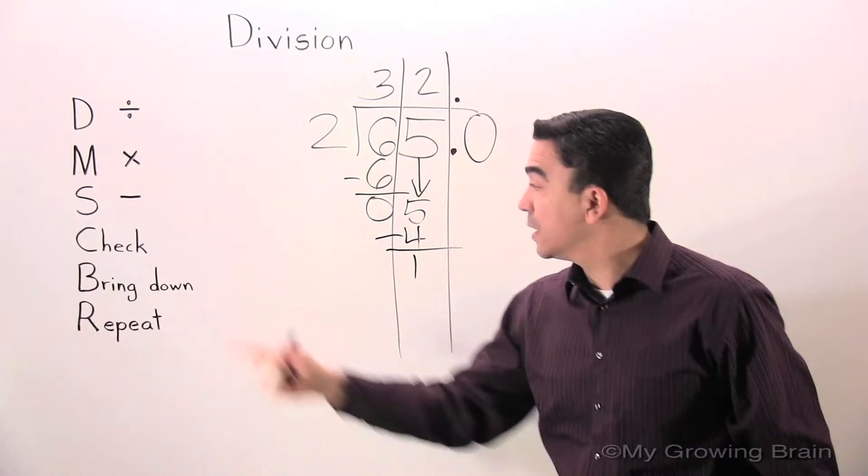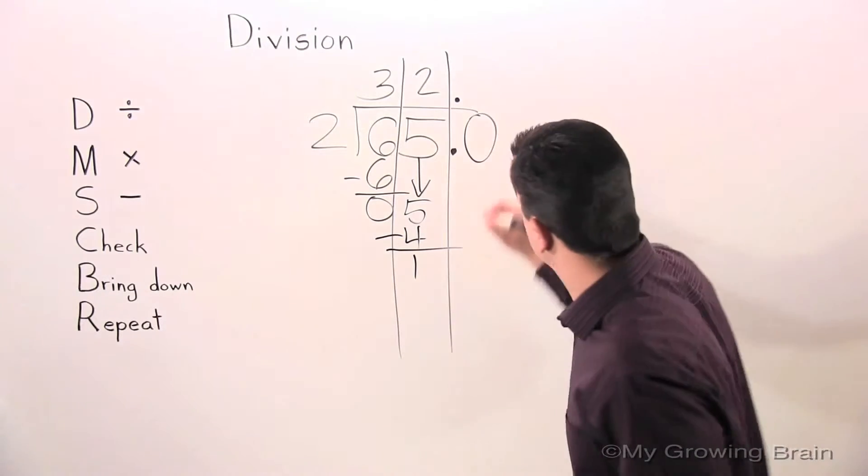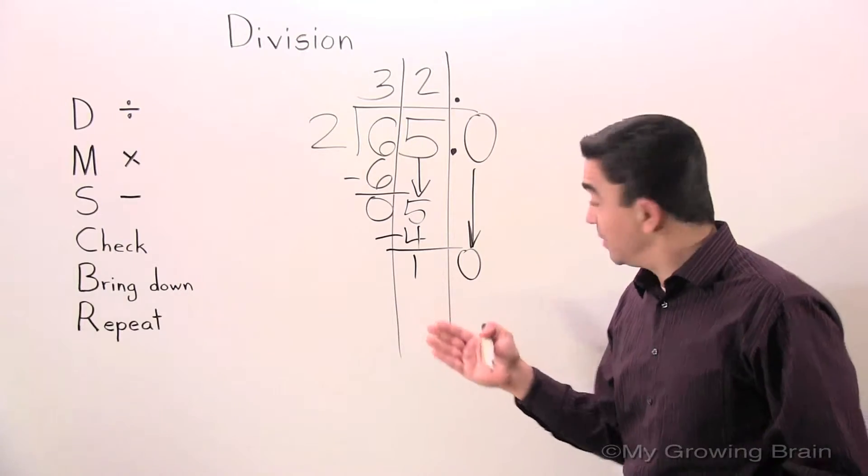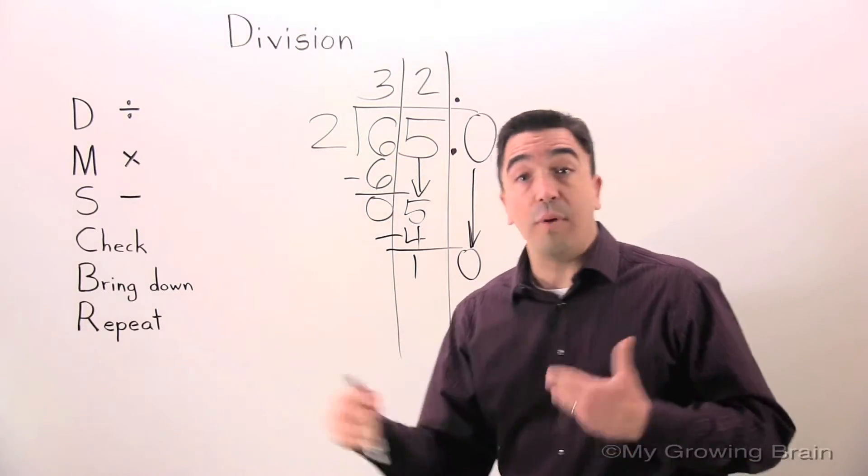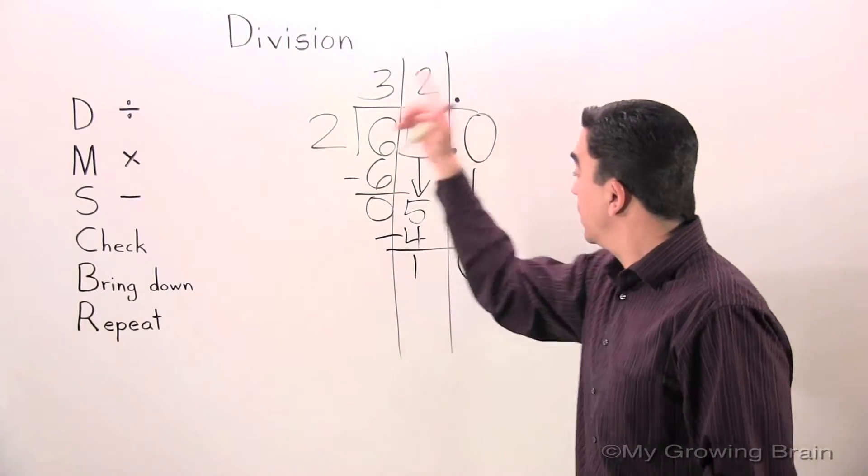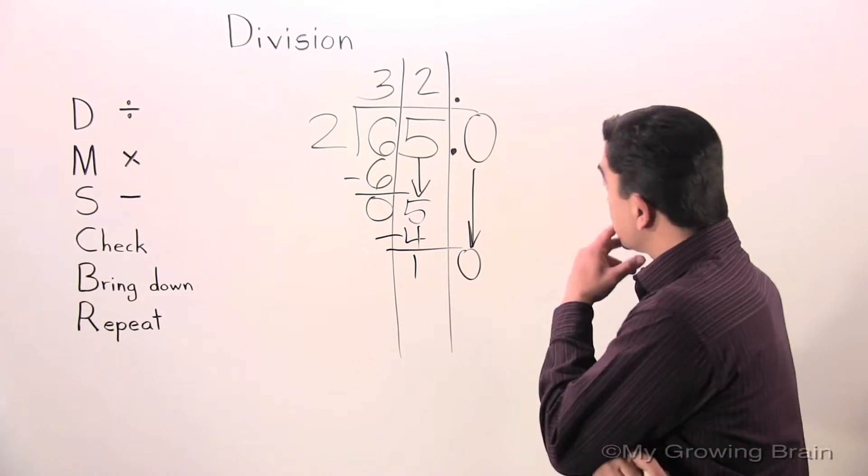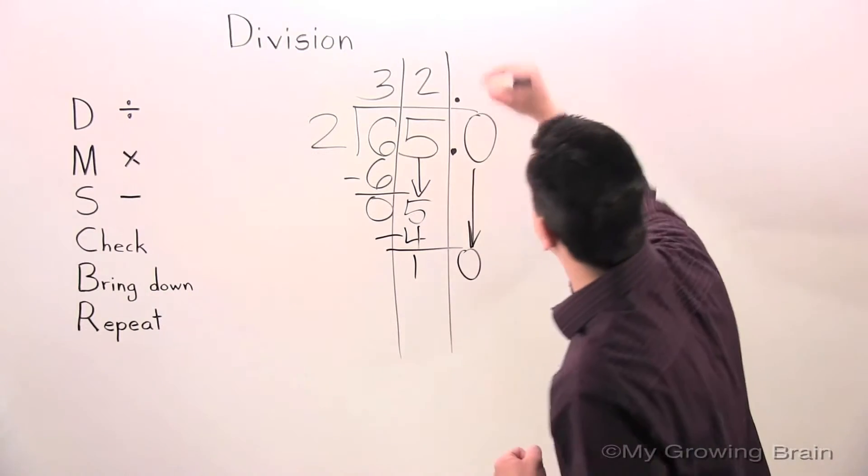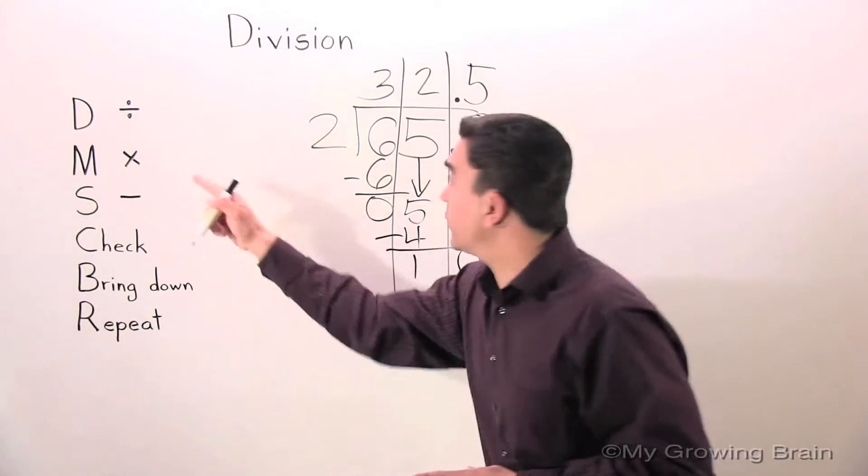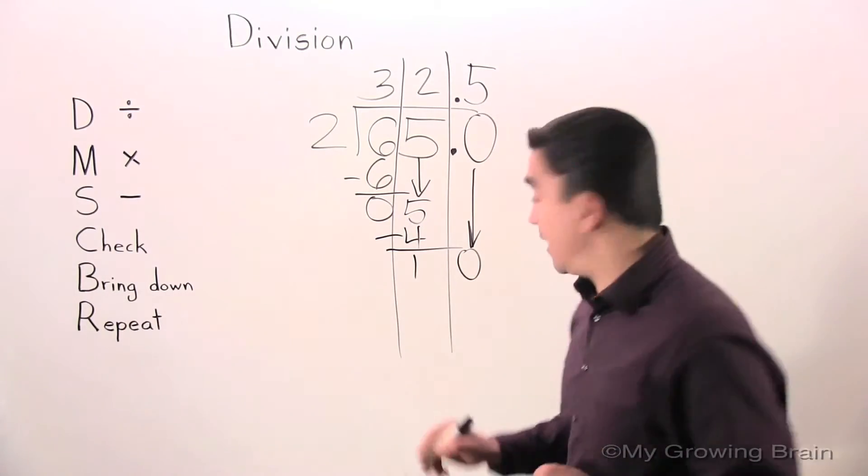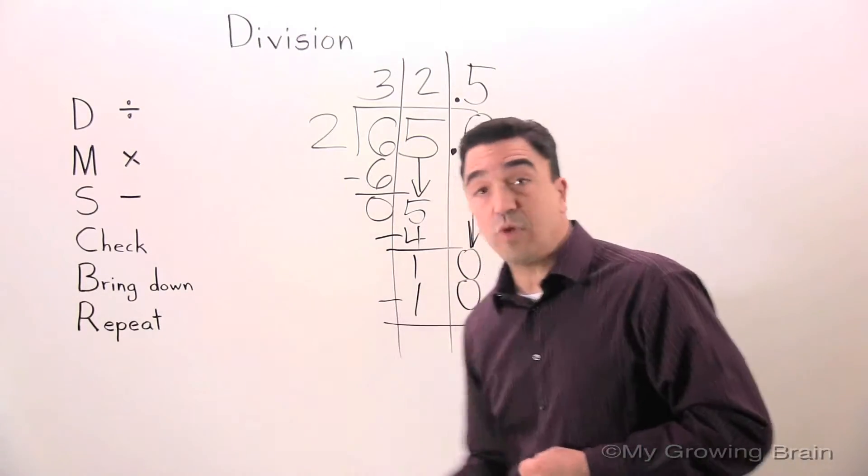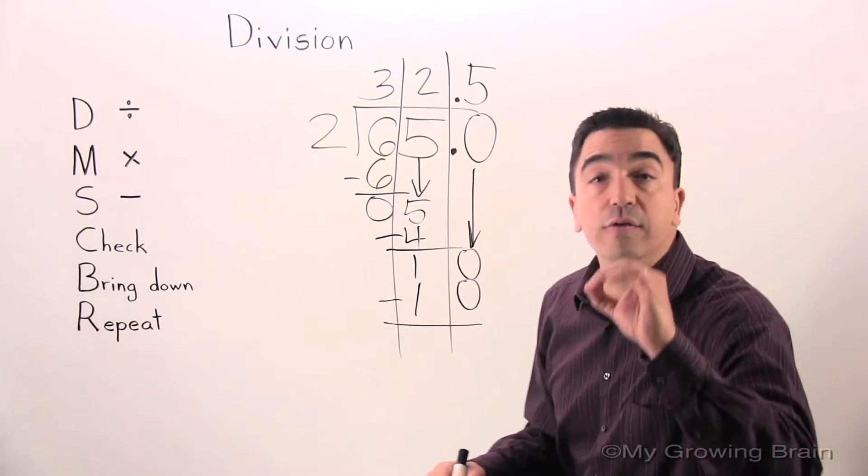Let's continue our problem. Bring down. 10. Okay? Repeat the whole process back to the top. 10 divided by 2, or 2 into 10. 5 times. Next step, multiply. 2 times 5, 10. Next step, subtract. 10 minus 10, 0.